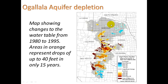A drop of 40 feet in 15 years makes you wonder how many more years at that rate the aquifer will remain viable. The areas shown in dark red are where the water table is dropping fastest. This is alarming because recharge takes a very long time — water stored in aquifers can be there for hundreds of years or longer. The recharge process is slow.